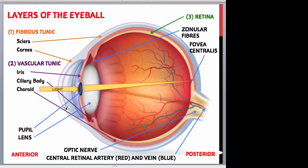The second layer is the middle vascular layer, also known as the uveal tract or the vascular tunic, which is made up of the iris, seen here, the ciliary body, which is this structure here, and the choroid, which is this pink-looking structure here. The third layer is the inner nervous tissue layer, also known as the retina, which is the shadow structure here.